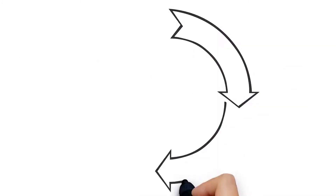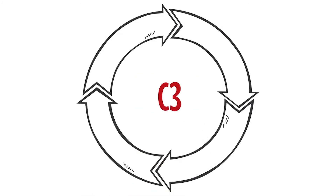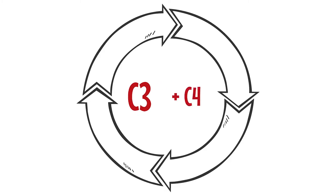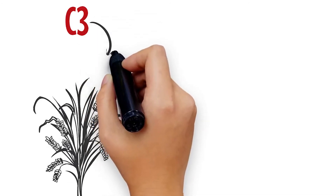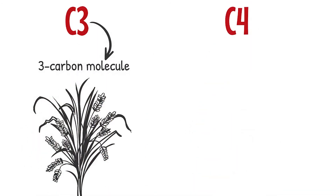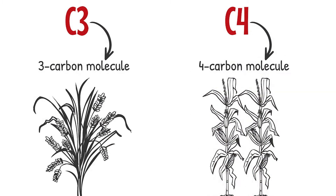The terms C3 and C4 actually refer to the different pathways that plants use to capture carbon dioxide during photosynthesis. All species have the more primitive C3 pathway, while the C4 pathway evolved in species in the wet and dry tropics. The first product of carbon fixation in C3 plants involves a three-carbon molecule, while C4 plants initially produce a four-carbon molecule that then enters the three-carbon molecule cycle.